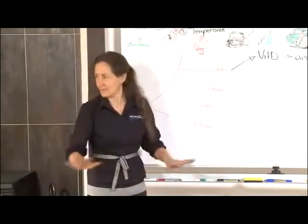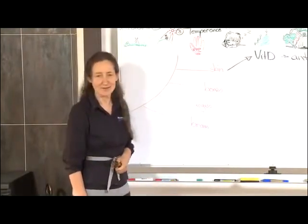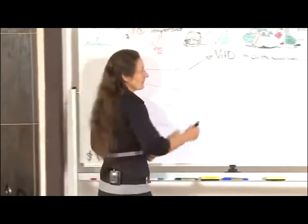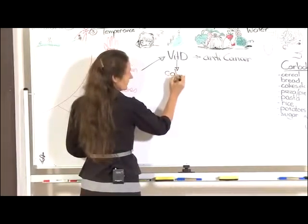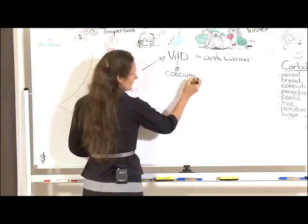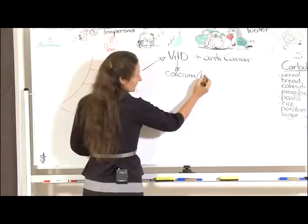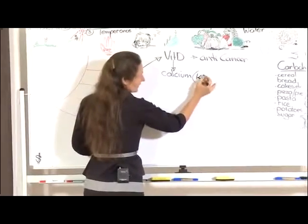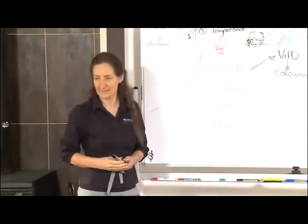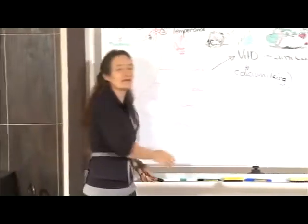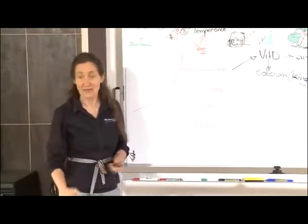Vitamin D is essential for the assimilation of calcium in the body, and calcium's got a nickname: it's called the king. When calcium gets into the body, all the other minerals piggyback on the back. If you can get calcium in, you can get all the other minerals in. The gardener knows it.